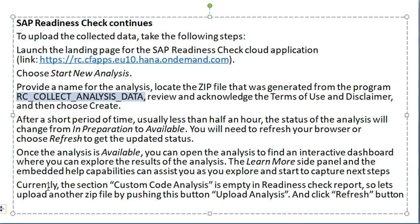Currently, the custom code analysis is empty in the readiness check report. So we upload another zip file by clicking the Upload Analysis button, and upload the previously explained custom code analysis zip file. Click the Refresh button to get the readiness check analysis report. Whatever modifications the readiness check report indicates, we change and prepare the system for the conversion.